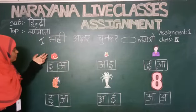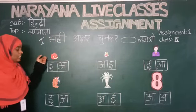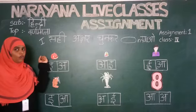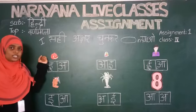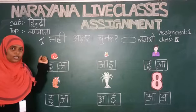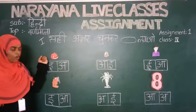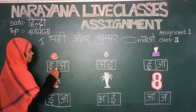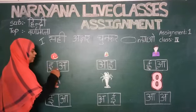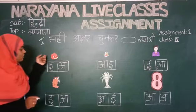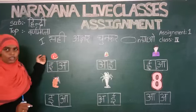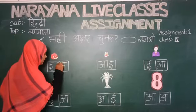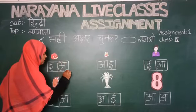What is the first picture? It is Anar — pomegranate. What is the first letter in Anar? A. Here we have two letters: E and A. What is the first letter of Anar? A. So we should circle the letter A.